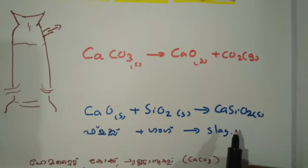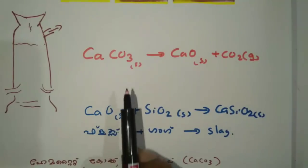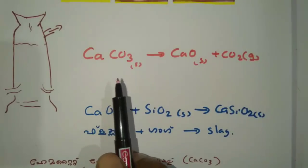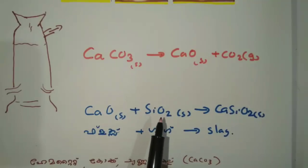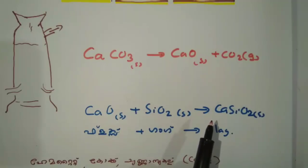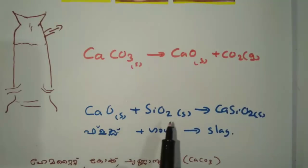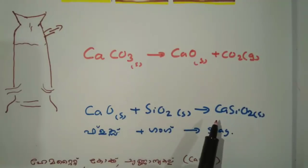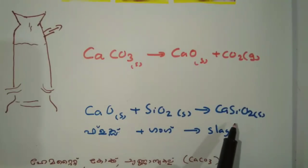Now let's see — the flux is calcium oxide, but we have calcium carbonate. We have calcium oxide. This is the gangue, this is a silicate. This flux produces slag — calcium silicate. Silicate oxide. Calcium silicate.